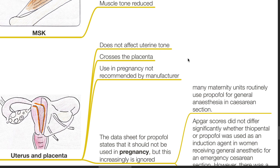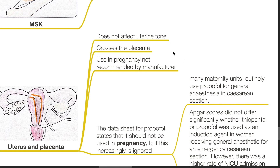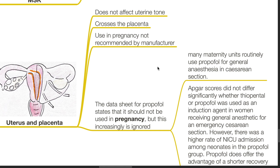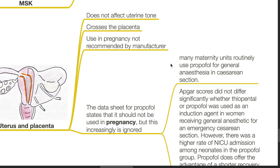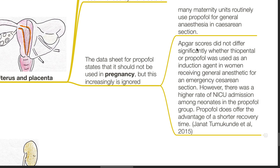It crosses the placenta, and use in pregnancy is not recommended by the manufacturer. However, many maternity units routinely use propofol for general anesthesia in caesarean sections. APGAR scores did not differ significantly when thiopentone or propofol was used as an induction agent for C-section under general anesthesia; however, there was a higher rate of NICU admission among neonates in the propofol group. Propofol does offer the advantage of shorter recovery time, according to research by Janat et al. in 2015.